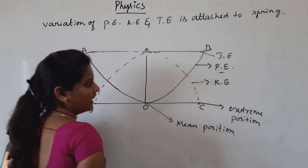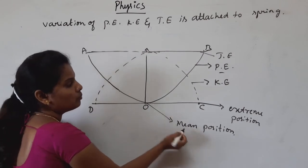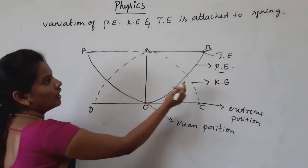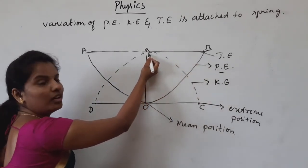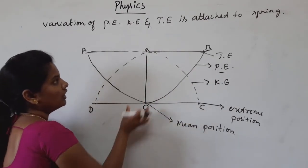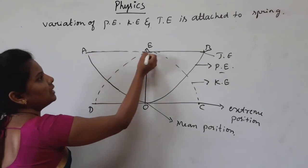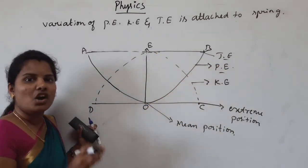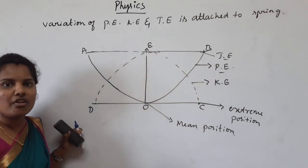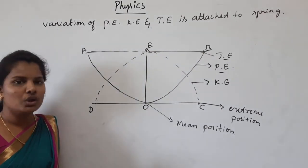The curve shows potential energy. The potential energy is maximum at the extreme position and minimum at the mean position. The kinetic energy is maximum at the mean position and minimum at the extreme position. The line A-B represents total energy, which remains constant at all points. This is the graphical method showing variation of kinetic energy, potential energy, and total energy.